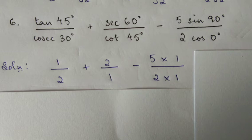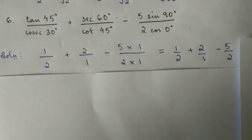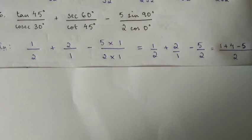By order of operations, we multiply first: 5 times 1 is 5, 2 times 1 is 2. So we have 1 by 2 plus 2 by 1 minus 5 by 2.